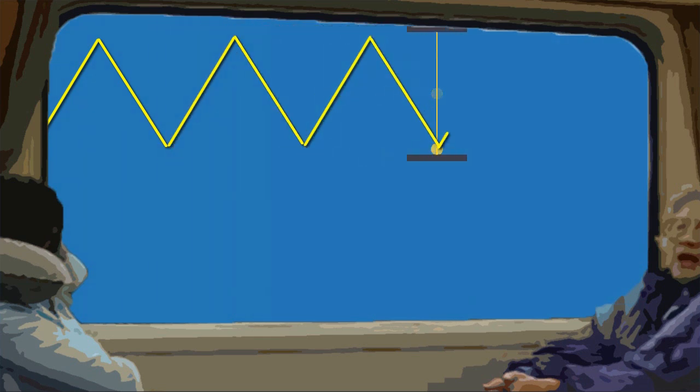How can that be? How can I on the platform think that time is running more slowly on the train, whilst you on the train think that time is running more slowly on the platform? Which of us is correct? The answer is we both are, because all measurements are relative, and the issue will be reconciled when we are both in the same frame of reference once more. I, on the platform, am in the Earth's frame of reference.